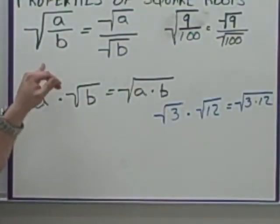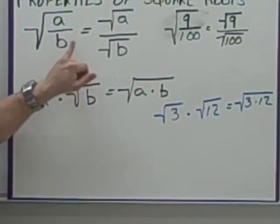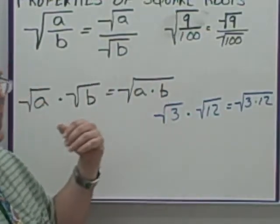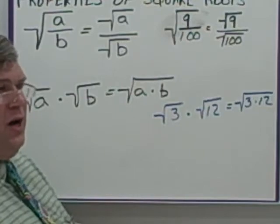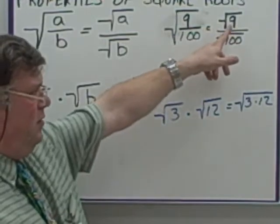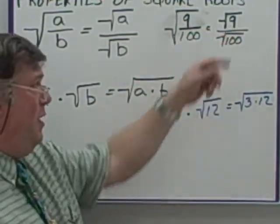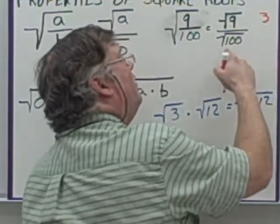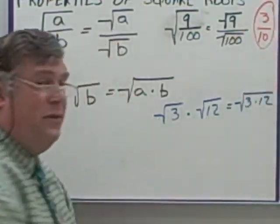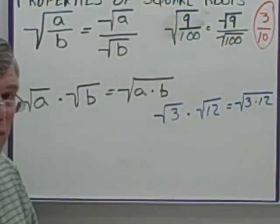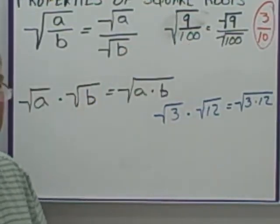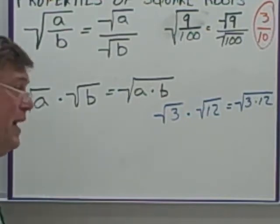Properties of square roots. If you take the square root of a fraction, it's the same as taking the square root of the top divided by the square root of the bottom. For example, the square root of 9 over 100: you don't want to divide 9 by 100 and get a weird decimal. Instead, the square root of 9 is 3 and the square root of 100 is 10 — giving you 3/10. Memorizing those perfect squares lets you simplify without a calculator, and they come up again and again.